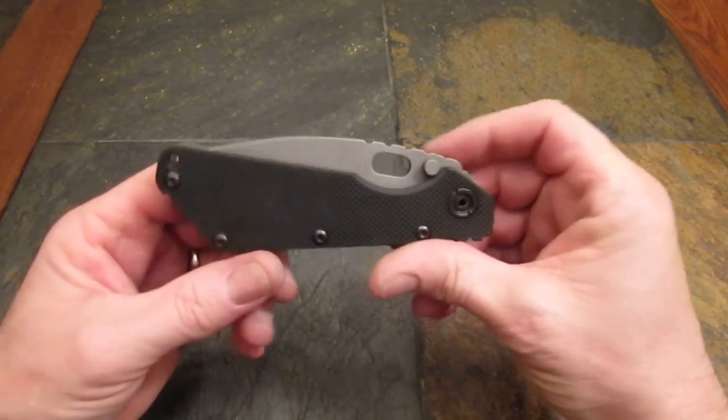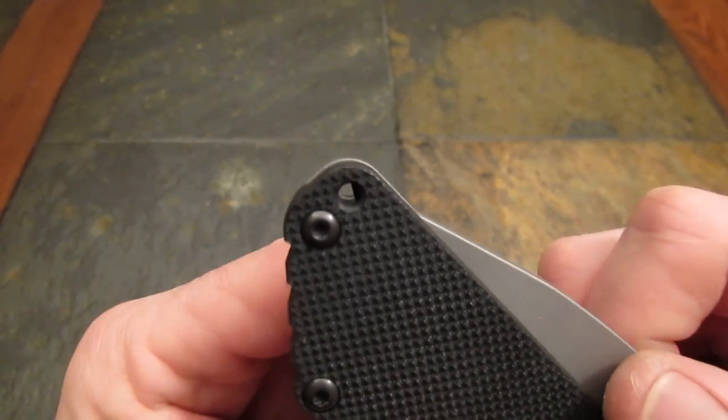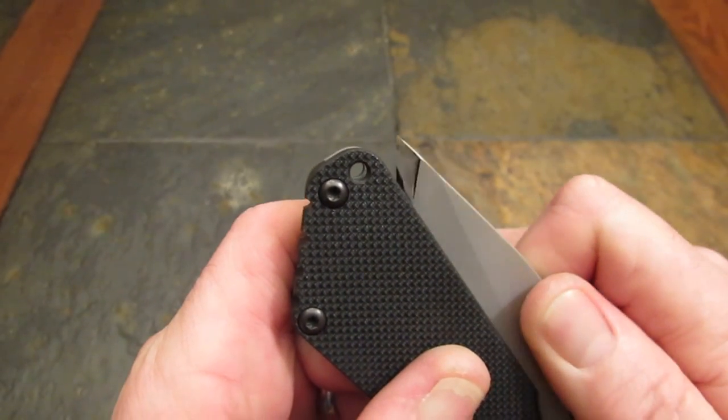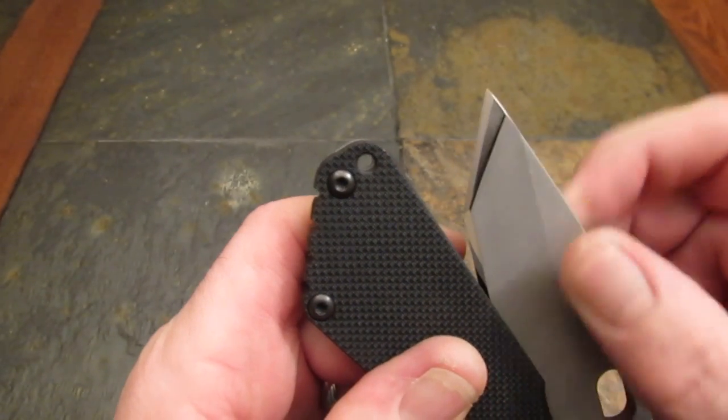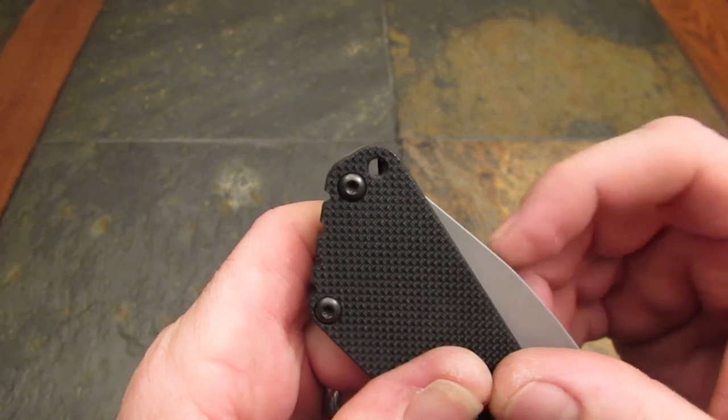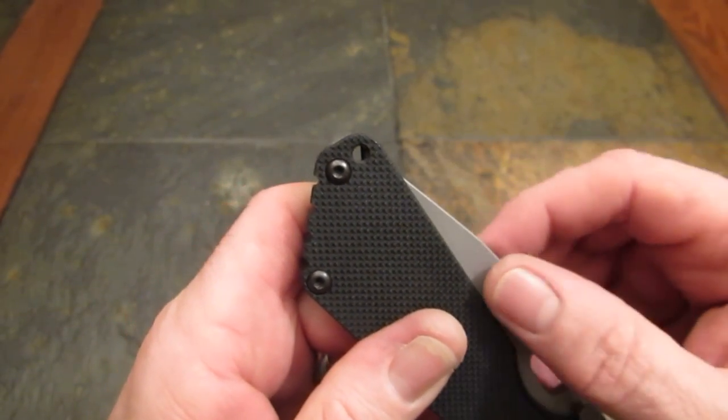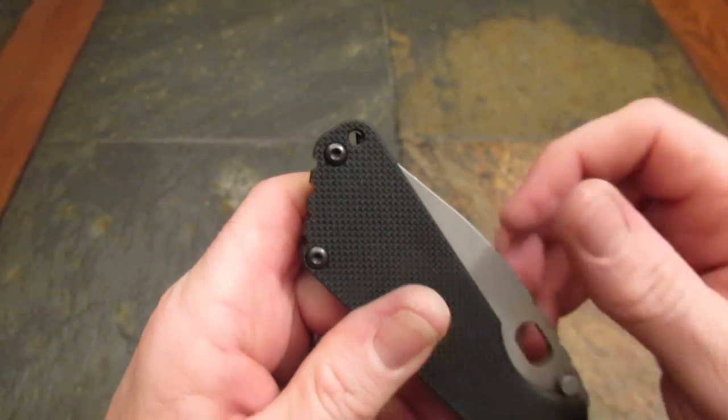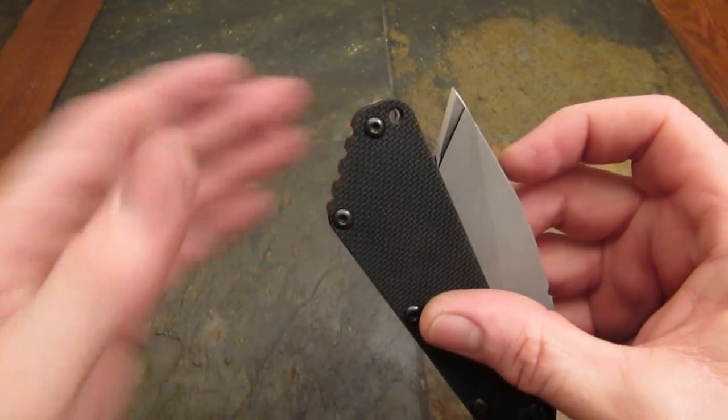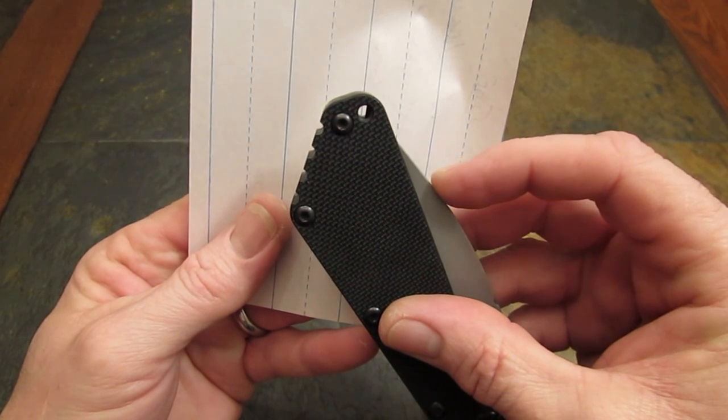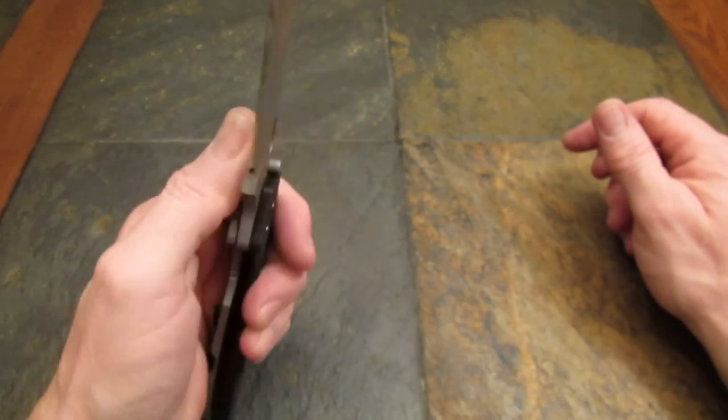Here's something I've never understood about Strider knives. Pay careful attention to the lanyard hole. Watch as I close the blade. I guess Mick doesn't like lanyards. It's like, sure, you want to put a lanyard on my knife? Go ahead, it's not gonna be there long because I'm gonna cut it off for you. I just don't get it. 400 bucks for a knife and the lanyard hole is defective by design.